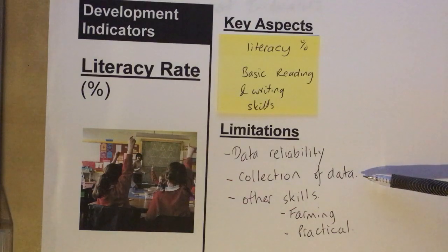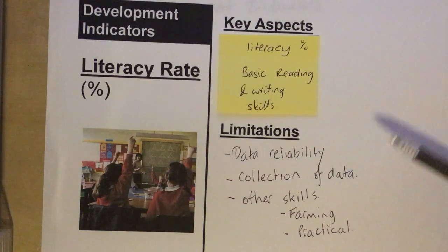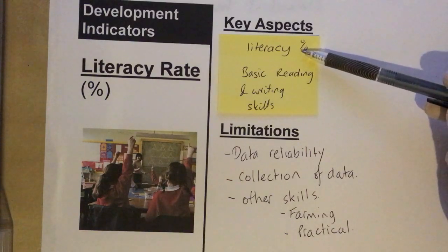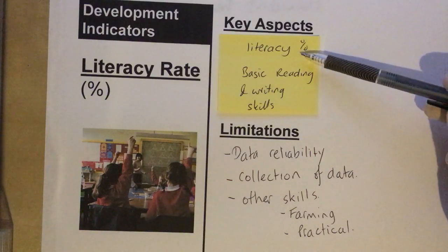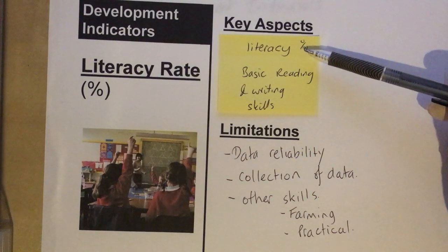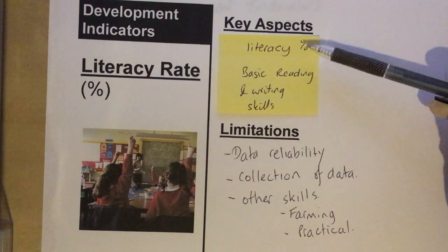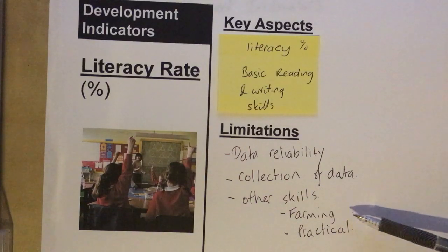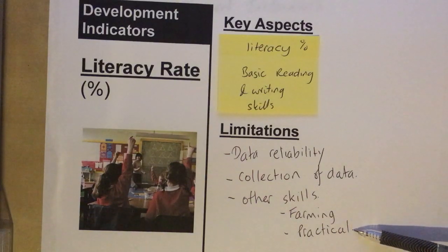Whilst literacy is a good measure of people's basic skills in terms of reading and writing, this measure doesn't take into account other skills that people might have. In lower income countries (LICs), such skills might include farming skills or other practical skills that may actually be a lot more useful to those people on a day-to-day basis.